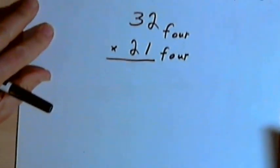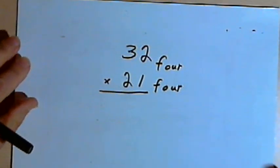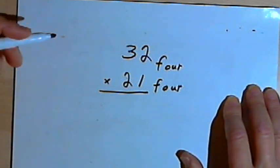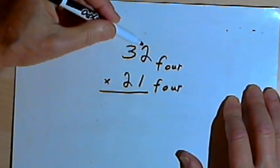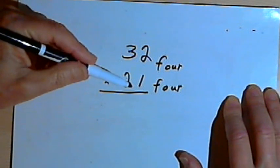So here's the first problem. I've got two numbers in base 4 and I want to multiply them. So I've got 32 base 4 times 21 base 4.